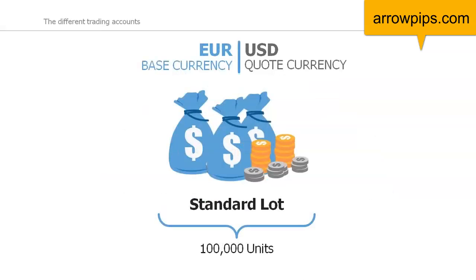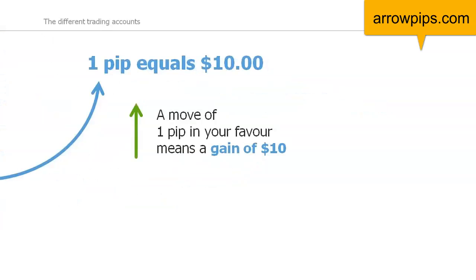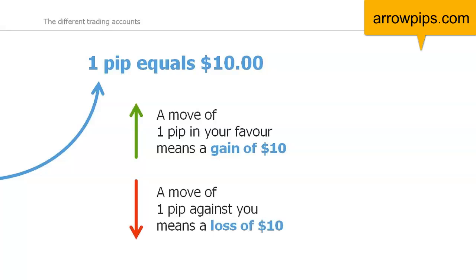A standard lot is equal to 100,000 units of the base currency. When you buy a standard lot of EURUSD you are buying 100,000 units. This means that one standard lot has a value of $10 per pip when trading major currency pairs. So if the market moves 1 pip in your favour, you make $10. If the trade moves against you by 1 pip, then you will lose $10.